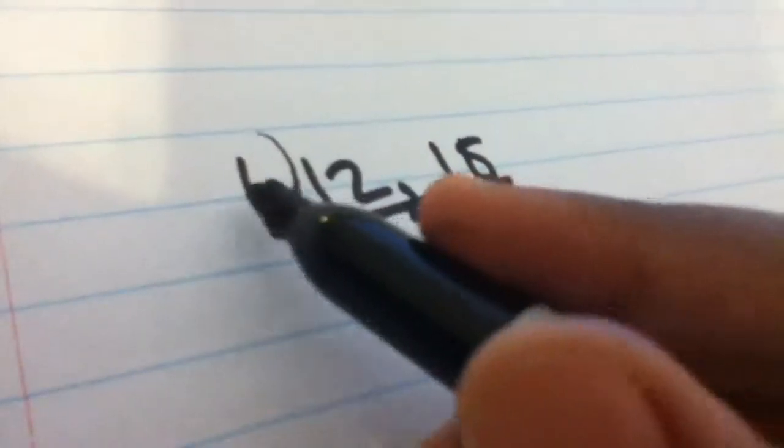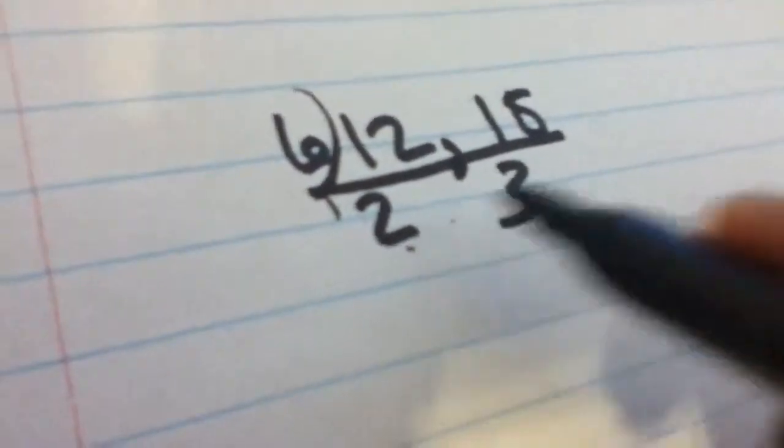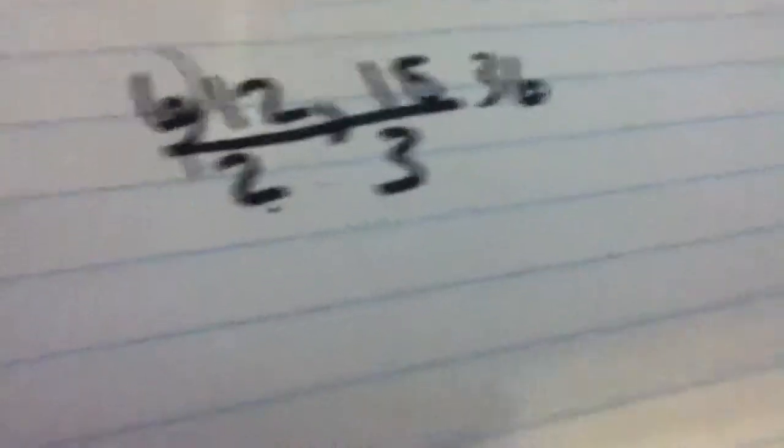Then you multiply 6 times 2 which is 12, 12 times 3 which is 36, and 36 is the least common multiple. That's how you find the shortcut for the least common multiple. I'll do another number.